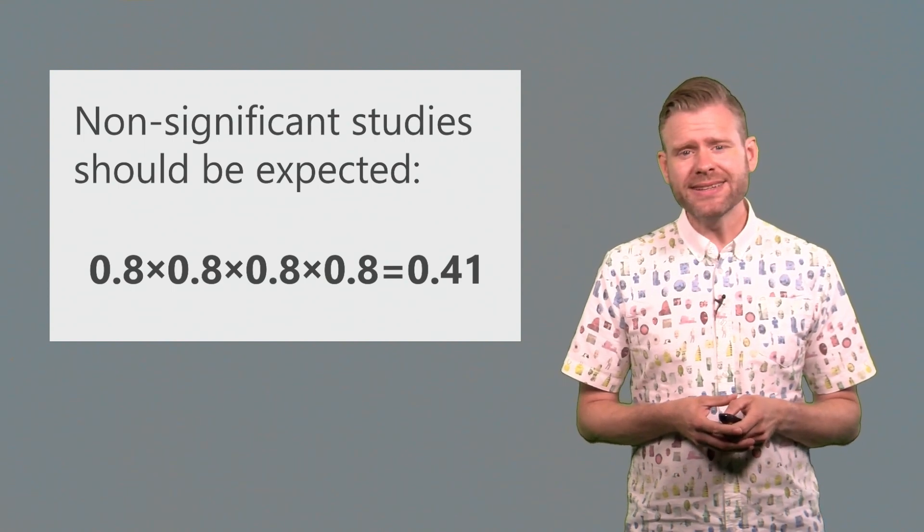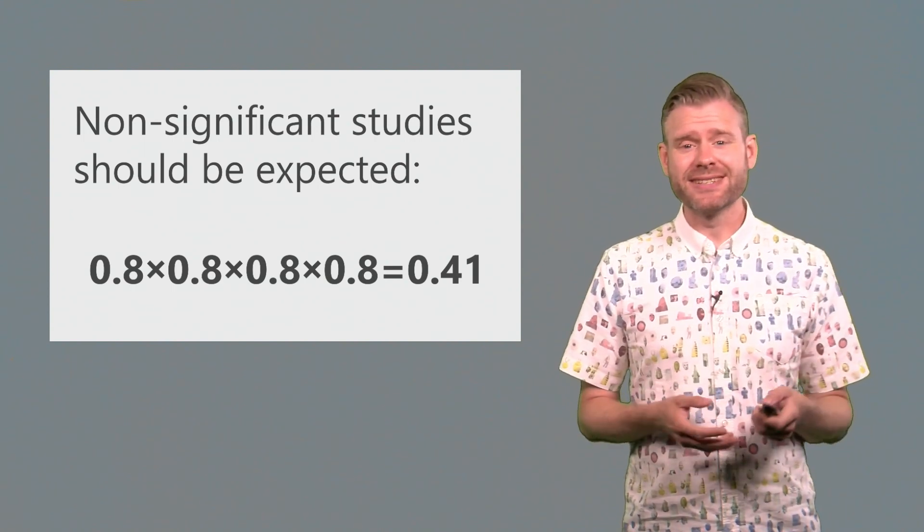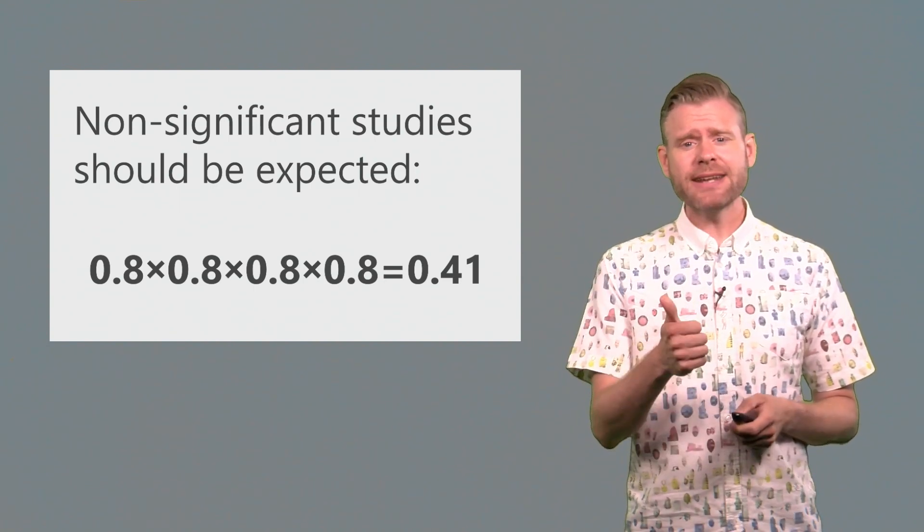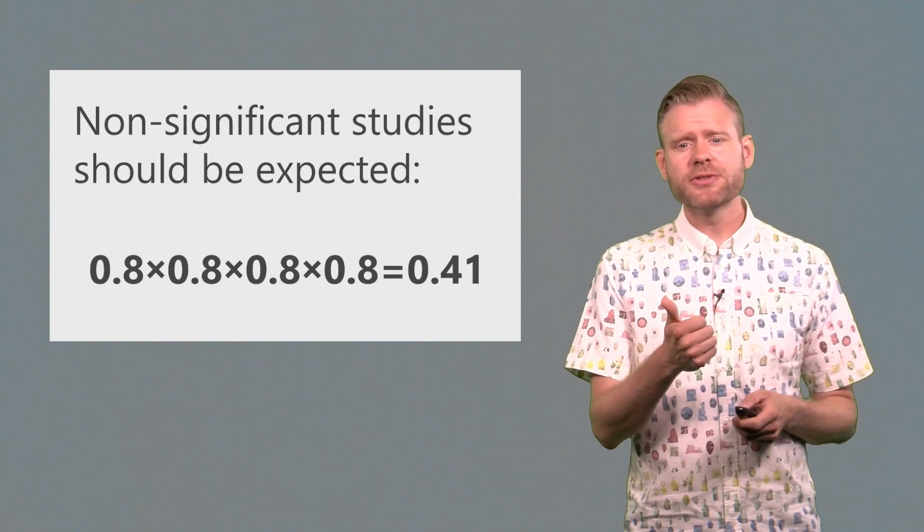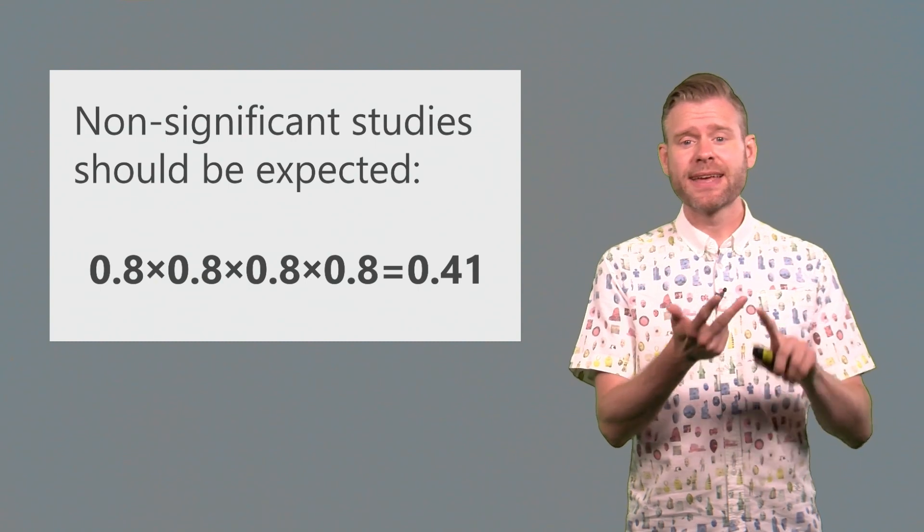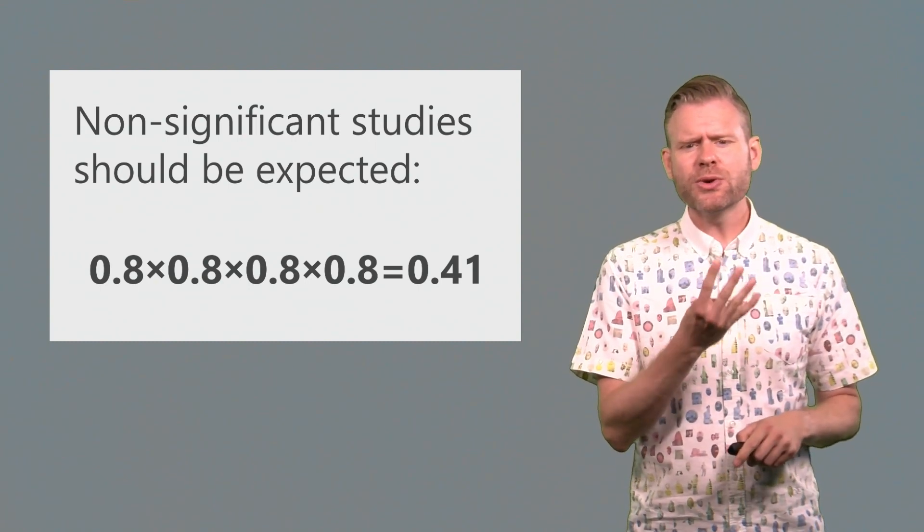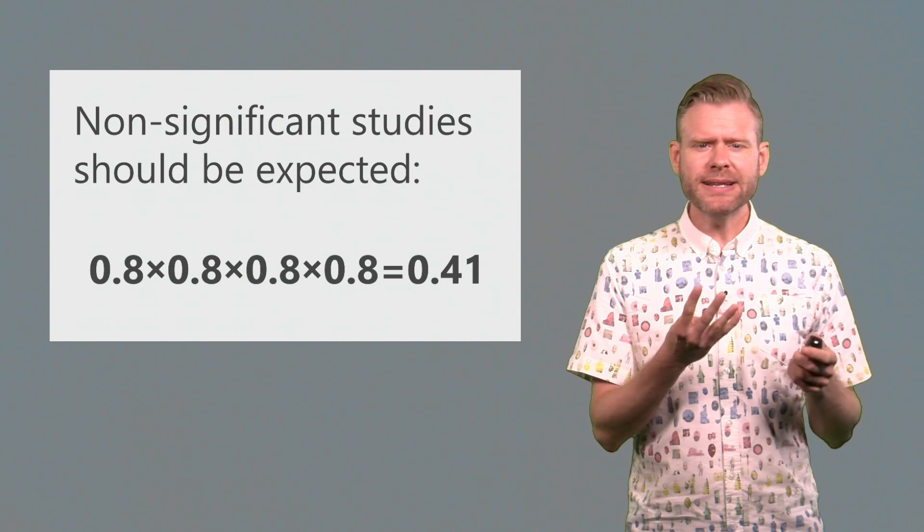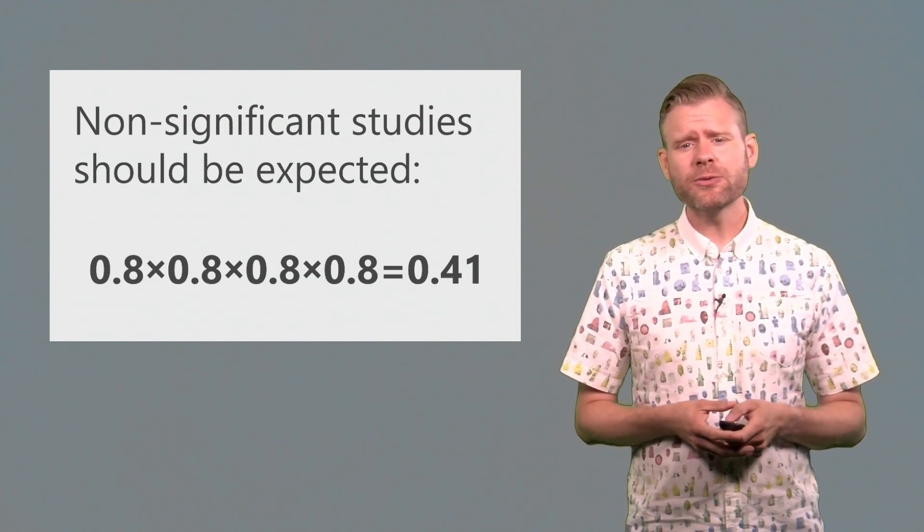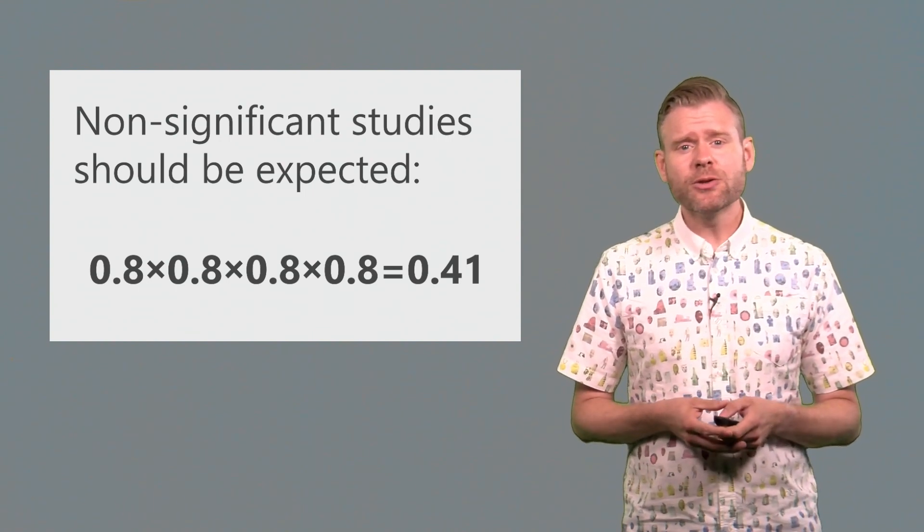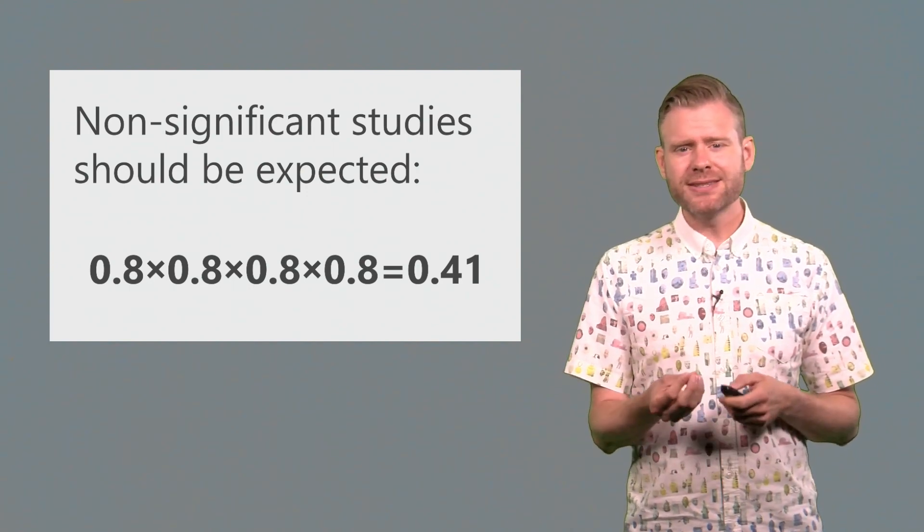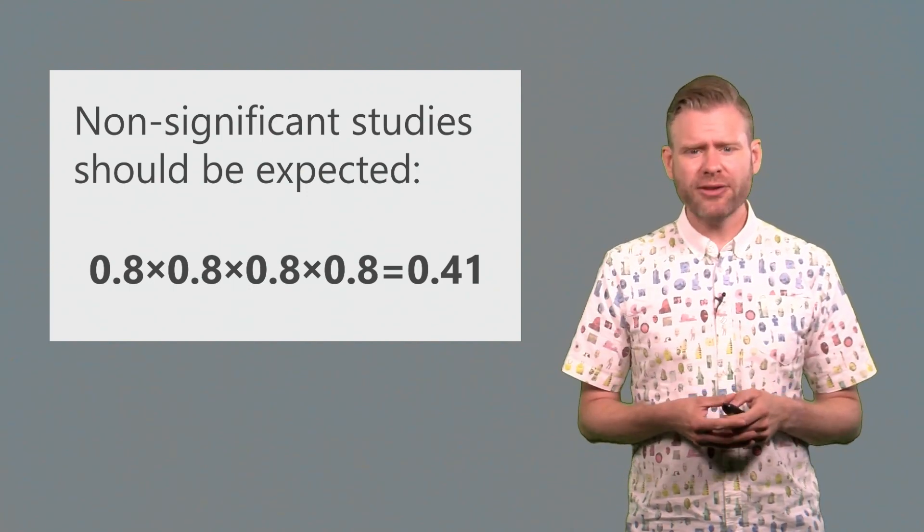What is then the probability that all four studies will be statistically significant? Well, we can easily calculate this. It means that you have an 80% probability of a significant result in the first study, multiplied by an 80% probability in the second study, and in the third, and in the fourth. So altogether, the probability that all of them will be significant if you have 80% power is actually 41%. It means it's more likely that you'll observe mixed results in a set of four studies, if your hypothesis is true, and if you have 80% power.